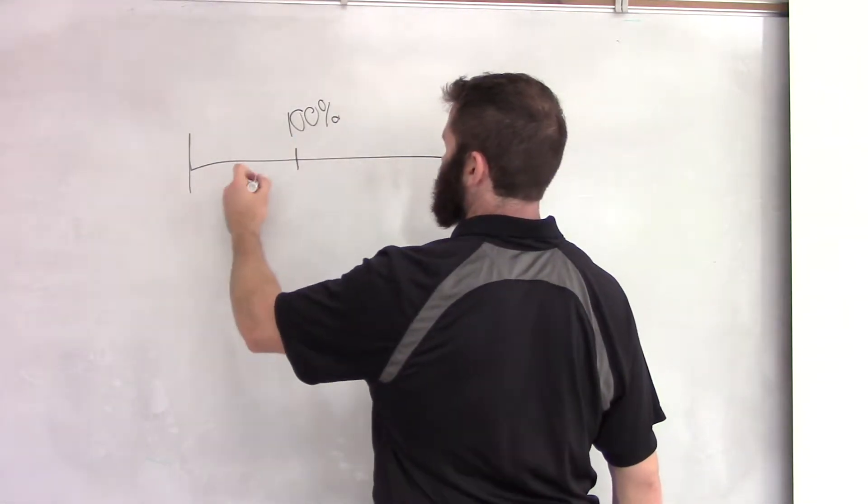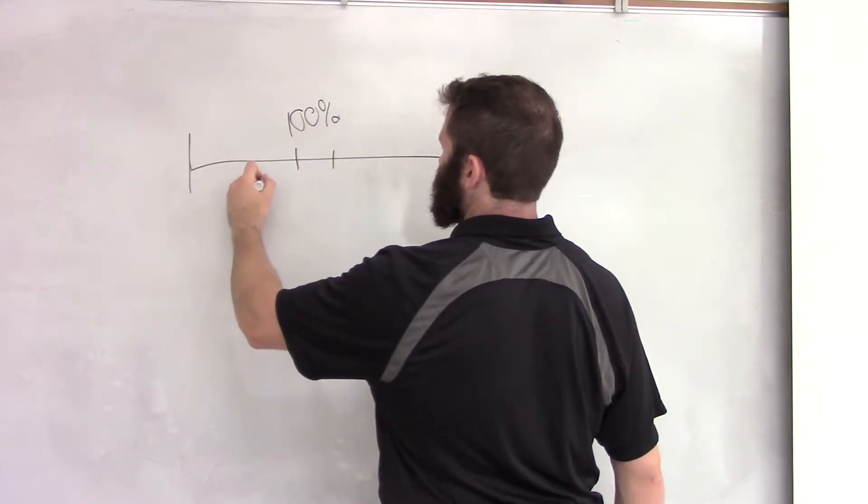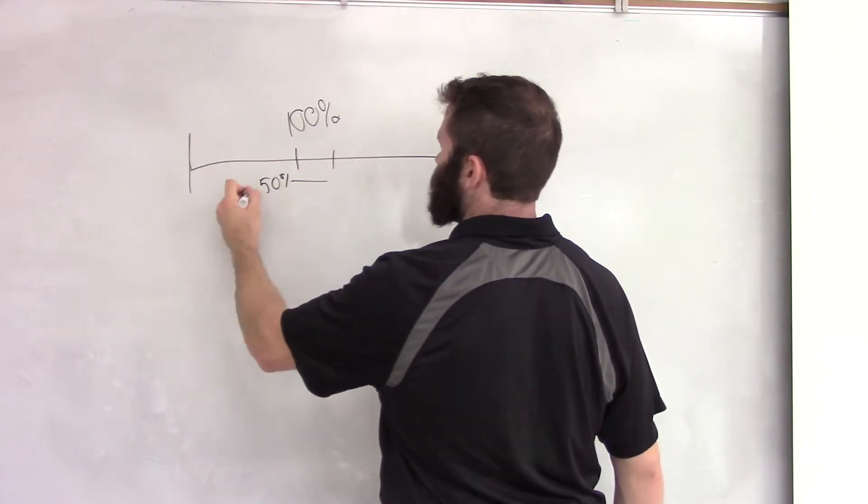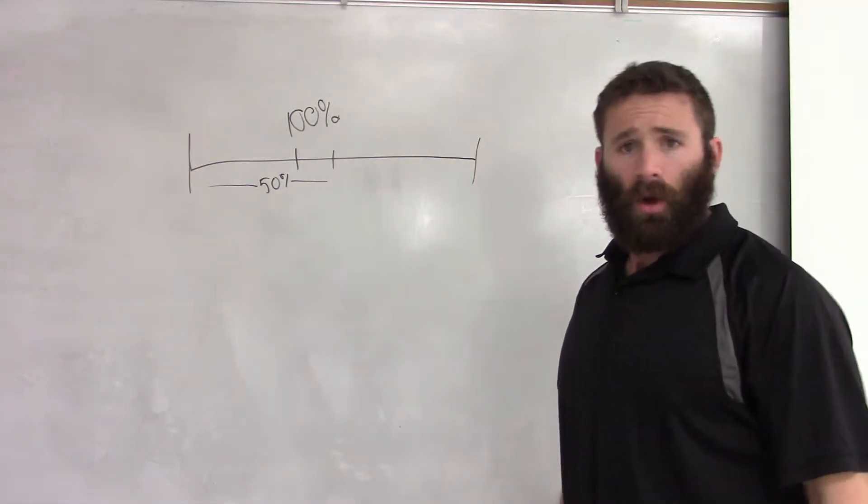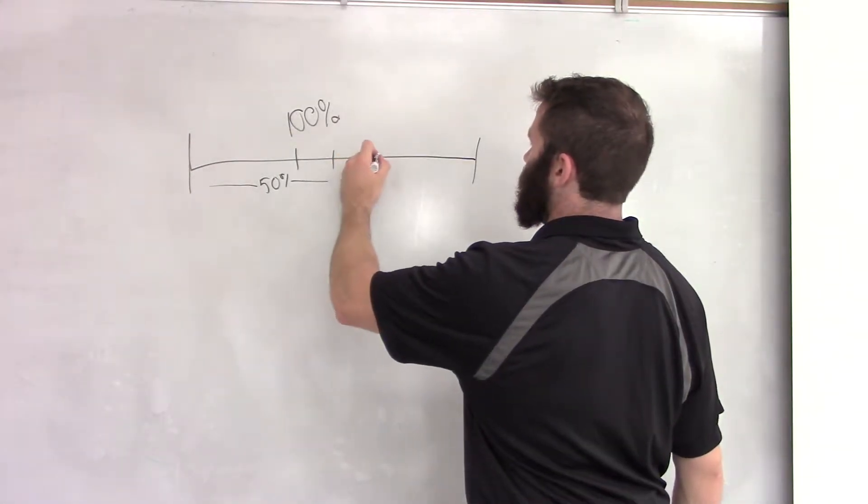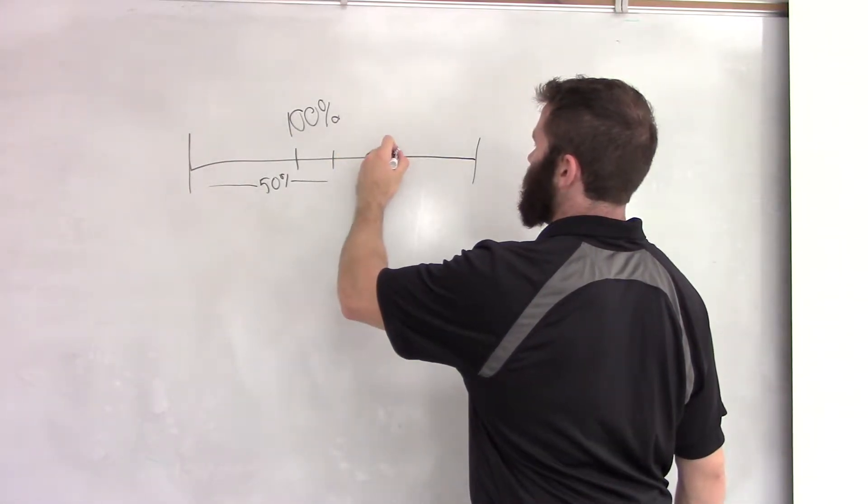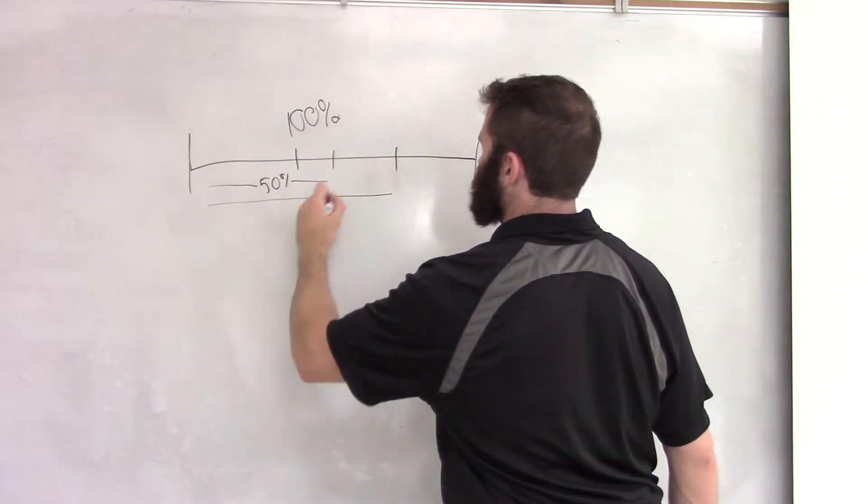Your first real training set is probably netting you somewhere in the neck of 40 to maybe even 50% of the total amount of gain that you're going to get from that training session. From there, your second and third set are probably going to get you maybe somewhere in the neck of, let's just say for the sake of argument, we're up to now a grand total of 75%.